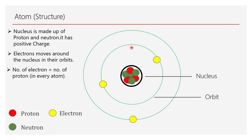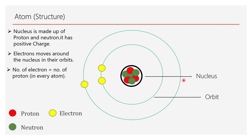Now we will see the structure of an atom. The nucleus is made up of protons and neutrons and has a positive charge. Electrons move around the nucleus in their orbits. The number of electrons equals the number of protons in every atom.